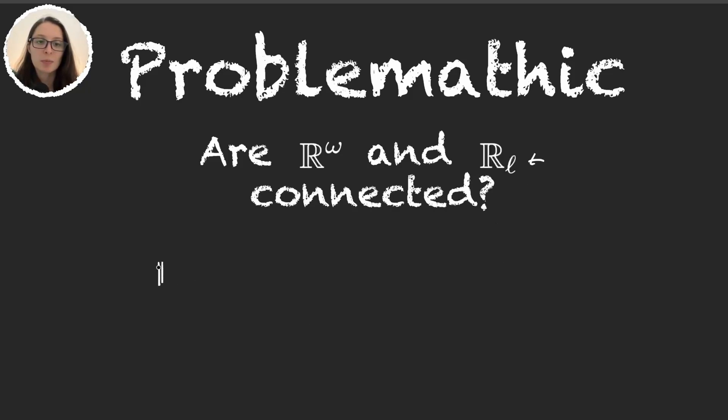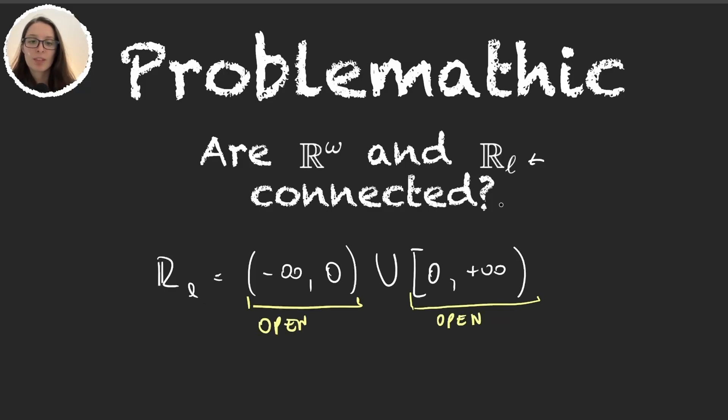R-L is very easy to see that it's not connected because it can be written as minus infinity zero union zero plus infinity. Obviously these two sets are open because we're talking about the lower limit topology, and they are clearly disjoint.